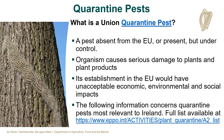What is a Union Quarantine Pest? A Quarantine Pest is a pest which is absent from the EU or present but under control. It is a pest which has caused or has the potential to cause serious damage to plants and plant products. The establishment of a Quarantine Pest in the EU would have unacceptable economic, environmental and social impacts. Quarantine pests are regulated and plants and plant material must be free from these pests.